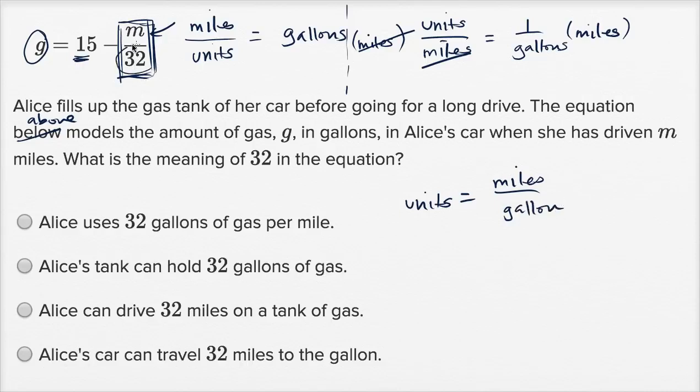So this right over here, the units over here, in order for this thing to come up to gallons, in the numerator you have m miles divided by 32 miles per gallon. Miles per gallon. This is telling you how much mileage you get per gallon for her car, how much she is getting. So let's look at the choices.